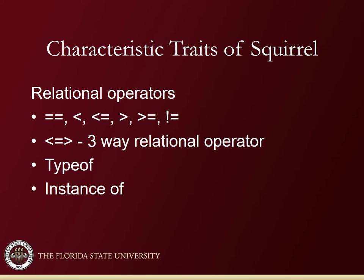Relational operators are supported in Squirrel: equals, less than, less than or equal to, greater than, greater than or equal to, and not equal to. Squirrel also has a three-way relational operator using less-than/equal/greater-than syntax that returns negative one, zero, or one based on whether two expressions are less than, equal to, or greater than each other. There is also a typeof operator that returns the type name as a string, and an instanceof operator that returns a bool.